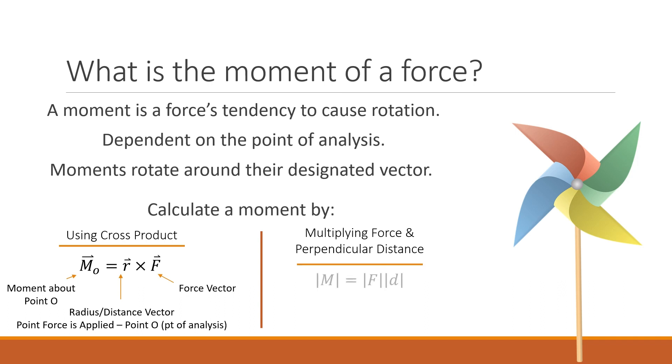In order to multiply a force and its perpendicular distance to get a moment, we're only going to get a moment magnitude rather than a moment vector, meaning we'll have to use logic to figure out the vector or direction of the moment. But the magnitude of the moment equals the magnitude of the force times the perpendicular distance between the point of analysis and the line of action of the force.